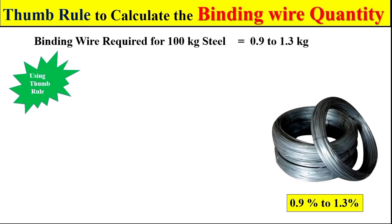Also remember, in some construction work the steel fixing is less, so we require a lesser quantity of binding wire — in terms of 0.9%. In some construction work the steel fixing is more, so we require a greater quantity of binding wire — in terms of 1.3% of the total steel work.